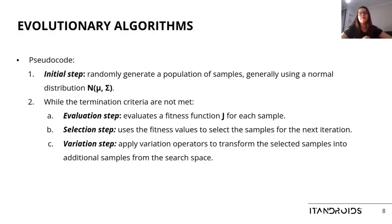Evolutionary algorithms are those that provide the user with a set of candidate solutions to evaluate a problem. They are based on the principle of biological evolution, in which mutation and selection of genes are applied to a population to obtain the best individuals. In the context of computing, evolutionary algorithms work like this. First, we randomly generate a population of samples, generally using a normal distribution. Then, while the termination criteria are not met, we evaluate a fitness function for each sample, use the fitness values to select the samples for the next iteration, and apply variation operators to transform the selected samples into additional samples from the search space.